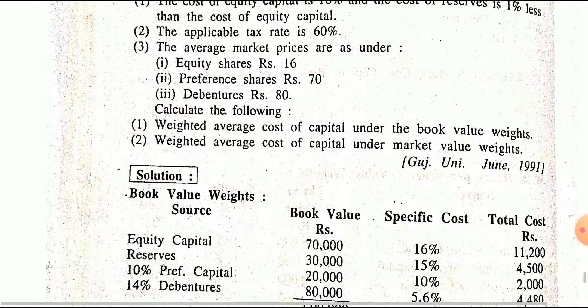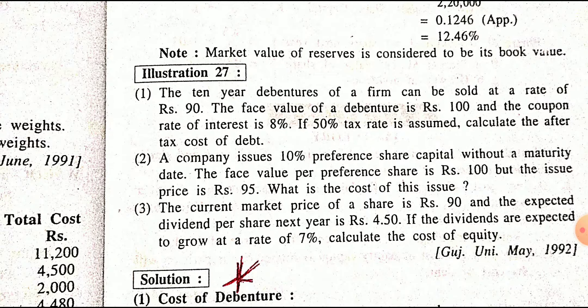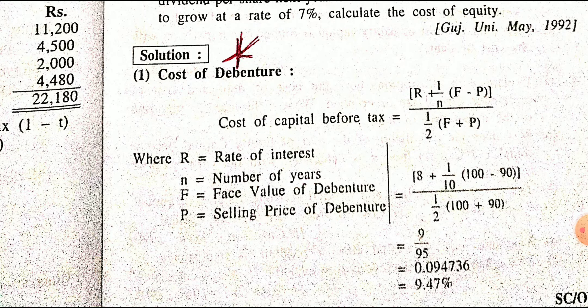Sum number 27: a 10-year debenture of the firm can be sold at a rate of 90. Face value of debenture is 100 — so this is a redeemable debenture. Coupon rate of interest is 8%, tax rate is 50%, calculate after-tax cost. Number of years is given, which means redeemable debenture. In the redeemable debenture formula: F is face value, P is net proceed. Sold at rate 90 so net proceed is 90; face value F is 100. Premium is added, discount is subtracted, and flotation cost is always subtracted.